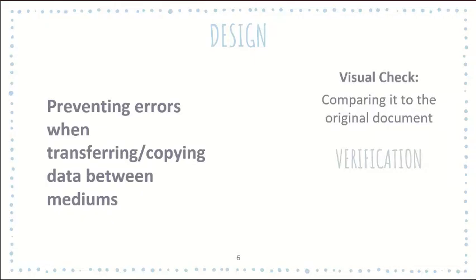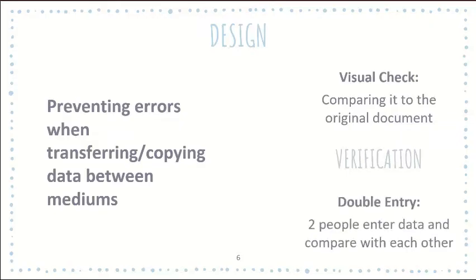There are two types of verification. We have a visual check, which is when you scan it with your eyes and then you compare it to the original document that you took your data from and you check for any differences. A proofread would be if you read it and try to figure out typos or grammatical errors. Then we have double entry. This is when two different people enter the same data and then we compare those data together and make sure there are no differences.